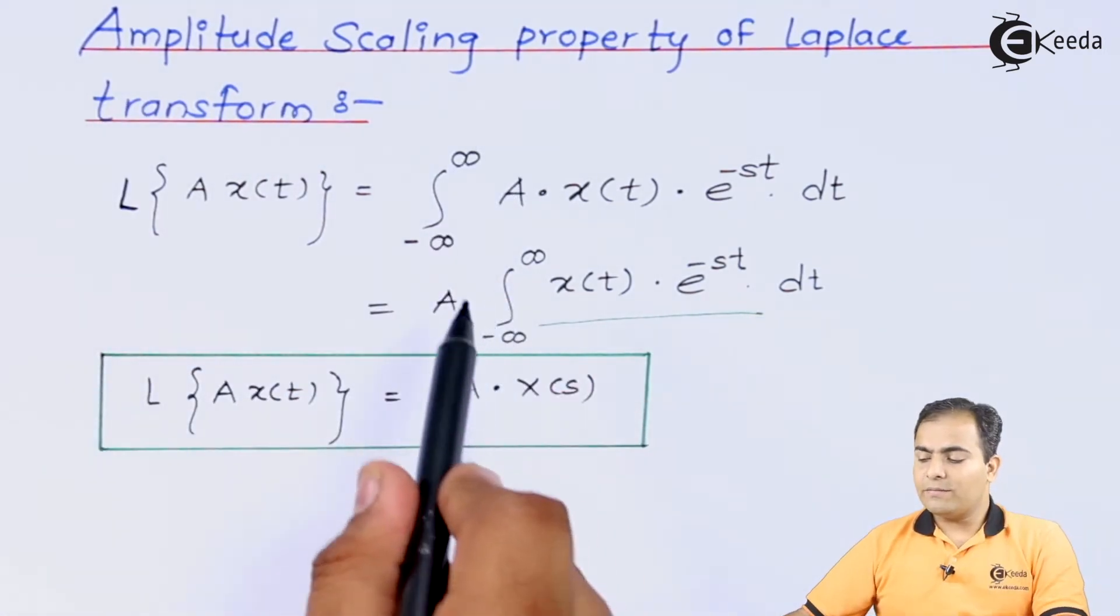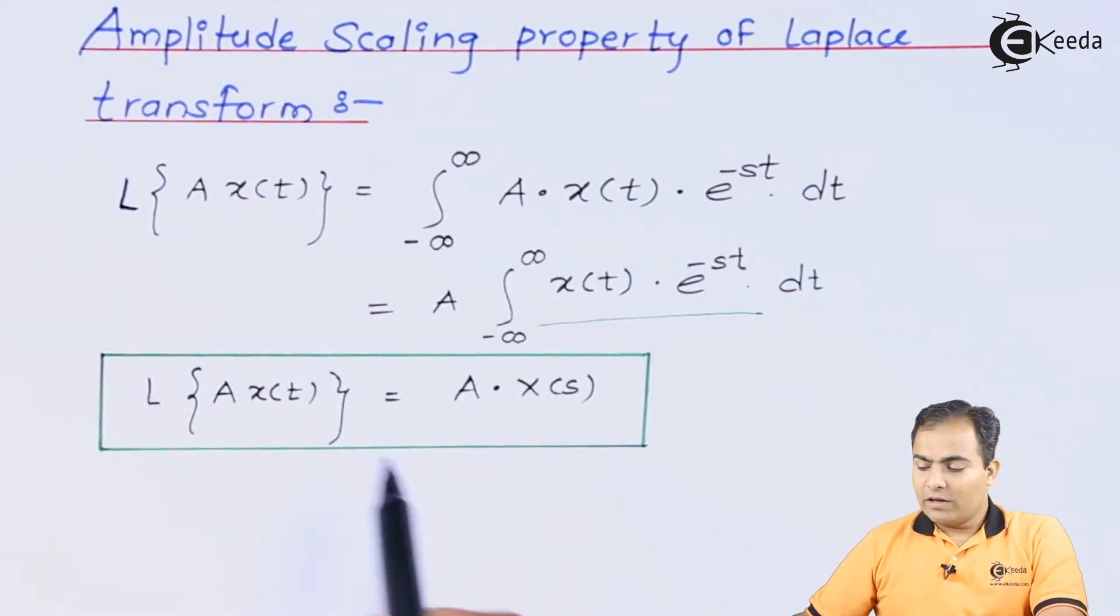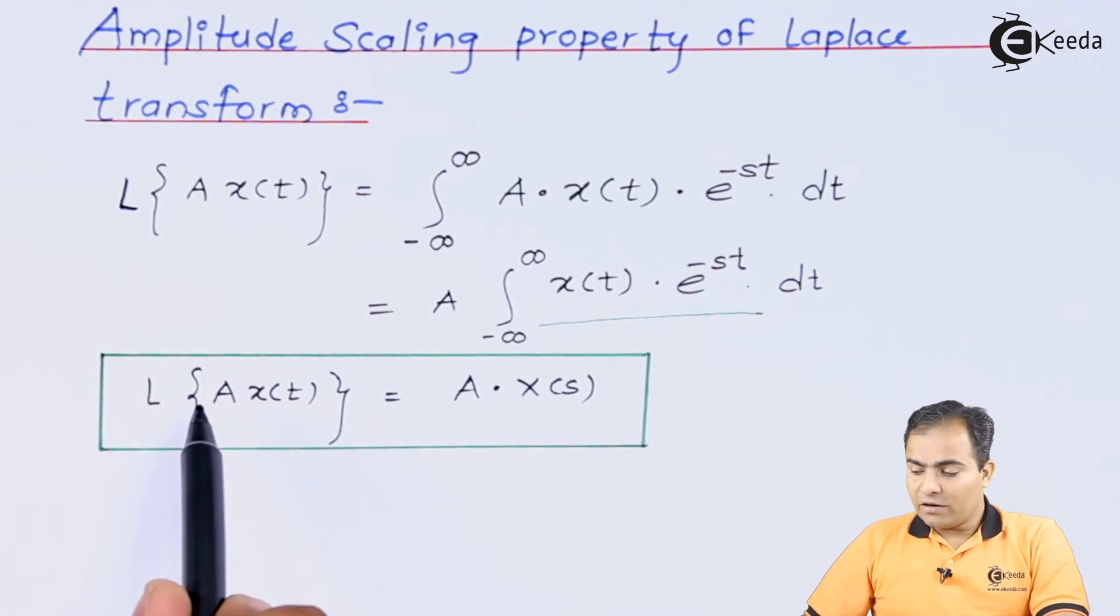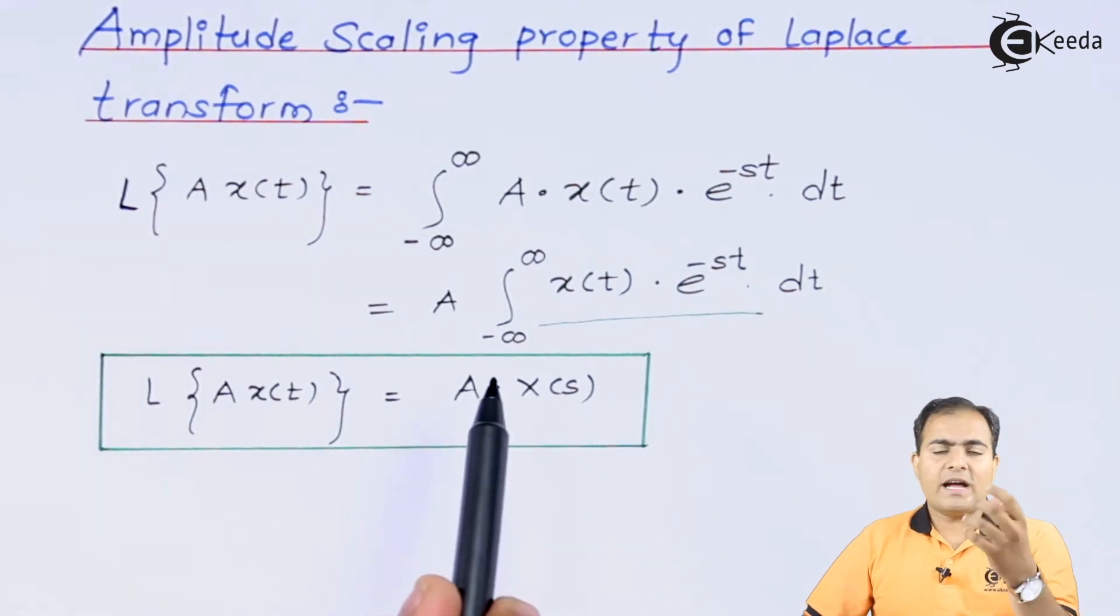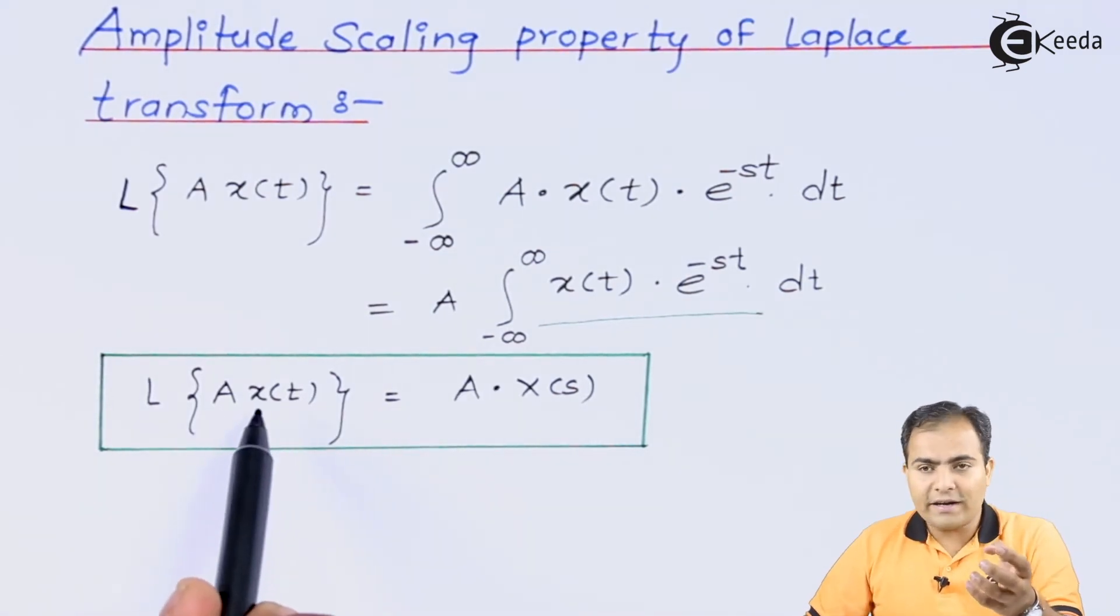So you can integrate or you can solve amplitude scaling property just by using this method. Amplitude scaling property of Laplace transform says that A into x of t is nothing but A, which is amplitude, into just find out Laplace transform of x of t and just multiply with the A.